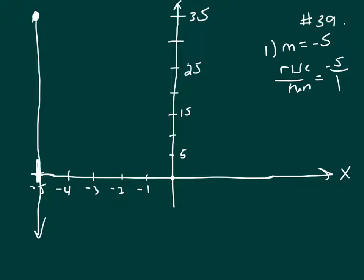Rise over run, I've made my y-axis 5 and my x-axis 1. If you do rise over run, rise negative 5, that means go down negative 5 and run 1. So that puts me there. Go down negative 5 and run 1, that puts me there. Continue this pattern, and you can see here the x-intercept is going to be positive.